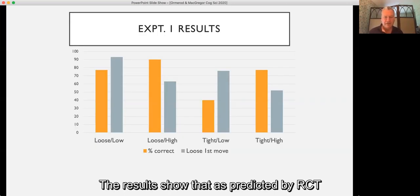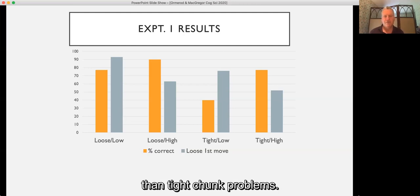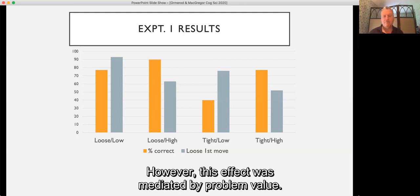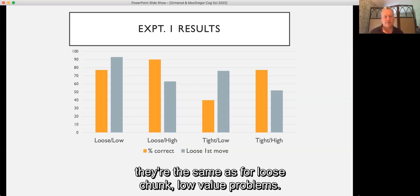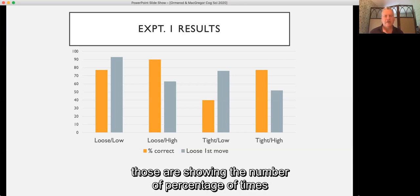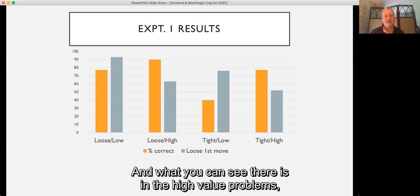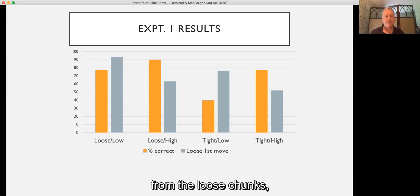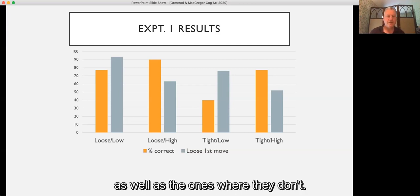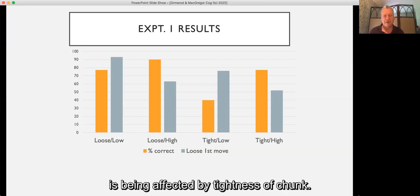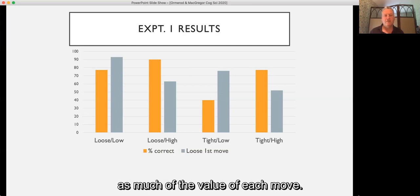The results show that, as predicted by RCT, chunk tightness does impact upon solution rates. Loose chunk problems were solved more often than tight chunk problems. However, this effect was mediated by problem value. If you look at the solution rates for tight chunk but high value problems, they are the same as for loose chunk low value problems. If you look at the grey columns, those are showing the number of percentage of times that participants' first move involved a match taken from a loose chunk. And what you can see there is, in the high value problems, they are much less likely to take a match from the loose chunks, both even when the solution requires a loose chunk as well as the ones where they don't. So it does seem then as if, whilst problem difficulty is being affected by tightness of chunk, the likelihood of solution seems to be a factor as much of the value of each move.